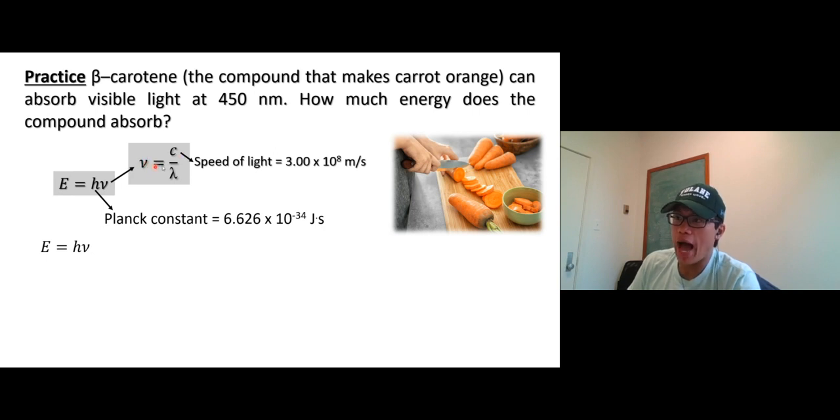I'm going to plug in here real quick. Nu equals c over lambda, so I'm going to convert nu to c over lambda—that's the same thing, just plug it in there. Now you need to know the Planck constant, the speed of light (which is also given), and the wavelength, which is given as 450 nanometers.